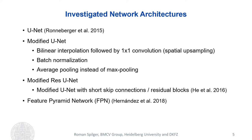We investigated different network architectures: the original U-Net architecture and a modified U-Net architecture which differs in three ways from the original. First, we employ bilinear interpolation followed by a one-by-one convolution layer instead of using transpose convolutions for the spatial upsampling operation, which reduces checkerboard artifacts in the output. Second, we include batch normalization layers after the rectifier linear units, accelerating training and improving network accuracy. Third, we use average pooling instead of max pooling to smooth the feature maps.